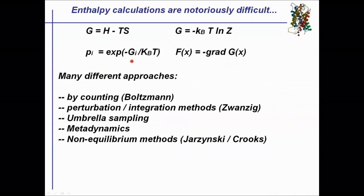Now, why don't we just take a textbook and look up the definition of free energy? One definition of the Gibbs free energy is G = H - TS: an enthalpy contribution minus a temperature-times-entropy term. This would be a valid way of computing a free energy, but unfortunately it's also very difficult. The enthalpy term is difficult to converge, and the entropy term is even more difficult to compute because entropy is a beast.